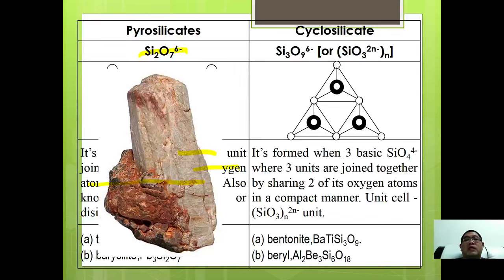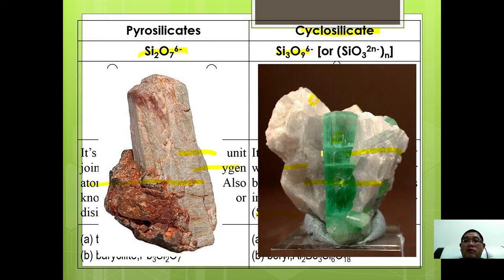The next derivative is cyclosilicate, made of three silicate anions bridging by three oxygen atoms forming this cyclosilicate structure. When three basic SiO4 units each share two oxygen atoms in a compact manner, the formula is Si3O9^6-, which can be expressed in empirical formula as SiO3^2-. Examples are benitoite and beryl, the green color shown here.